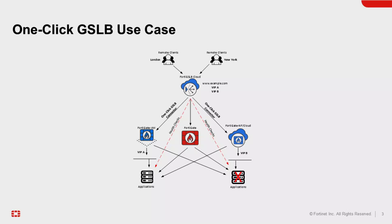The one-click GSLB essentially connects the various FortiGate VMs to the FortiGate appliance, as well as FortiGate native firewall or cloud solutions. It's called one-click GSLB because it propagates the FortiGate information towards the FortiGSLB configuration, making it easier for administrators to provision without complex configuration.